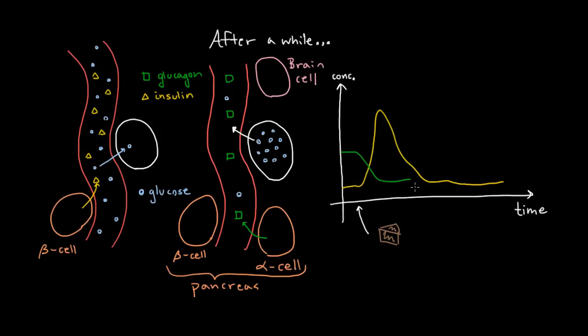And over time, as your body uses up the glucose that's in your blood, your glucagon is going to start to climb back up so that you can replenish the glucose in your blood slowly.